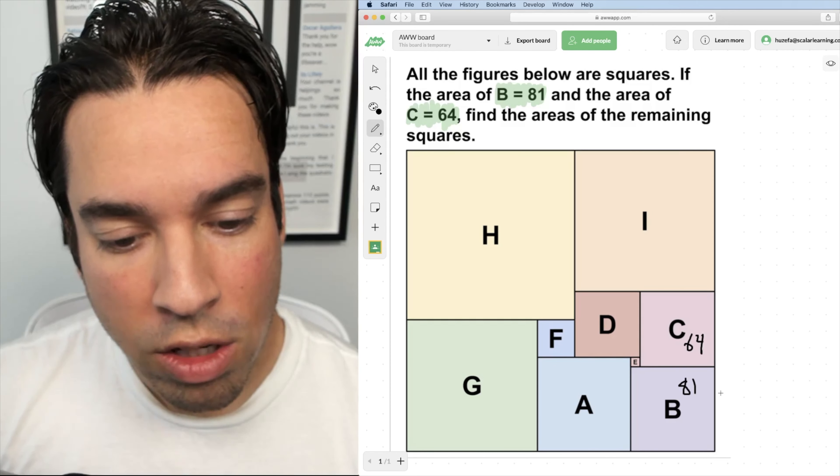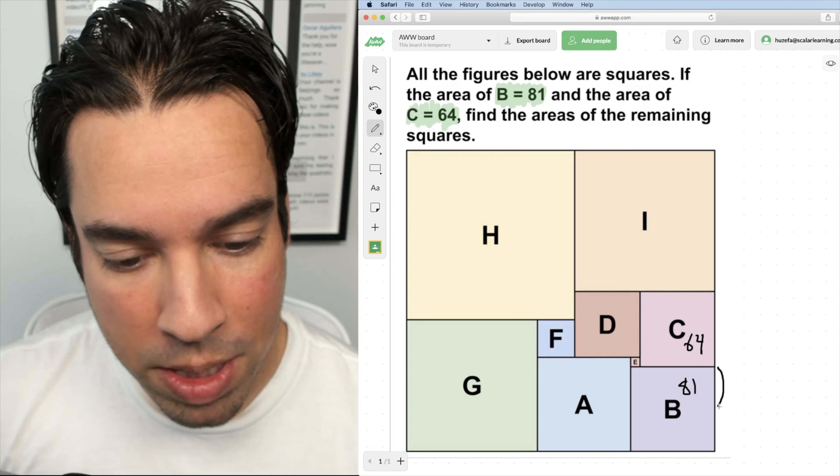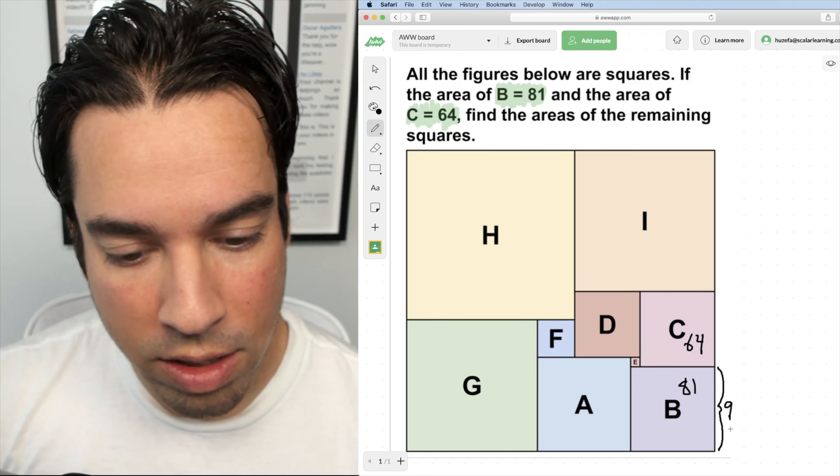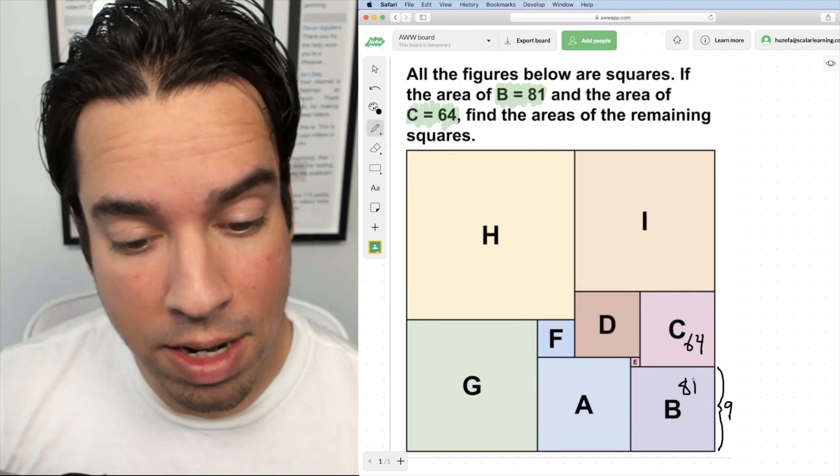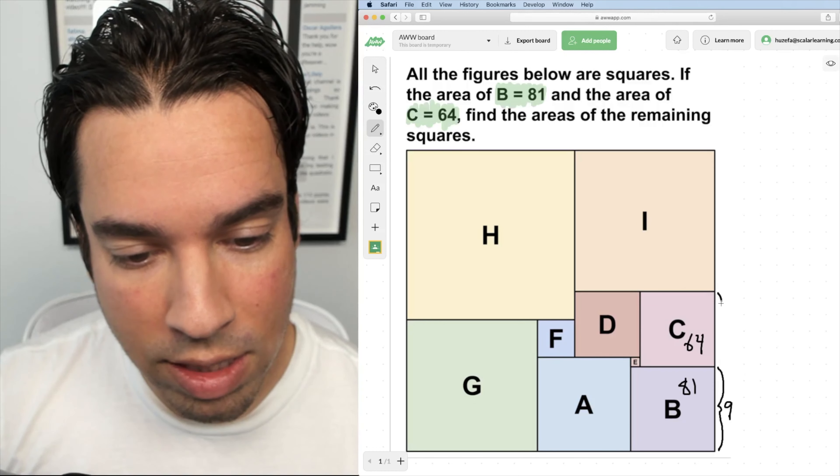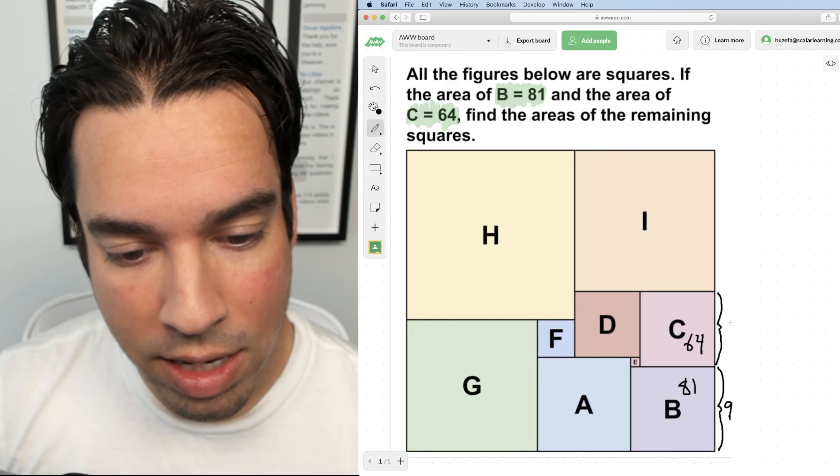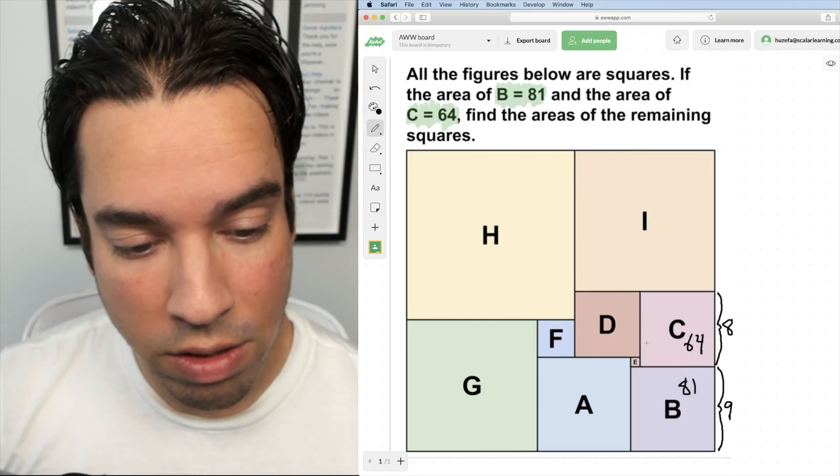Well, they're perfect squares. So let's start by saying that B has a side length of nine, right? It must be nine by nine. And then we can also say that C has a side length of eight because it's eight by eight, eight times eight gives you 64.